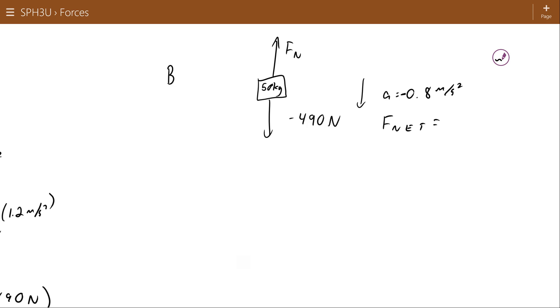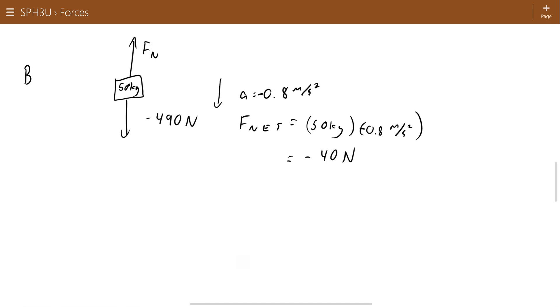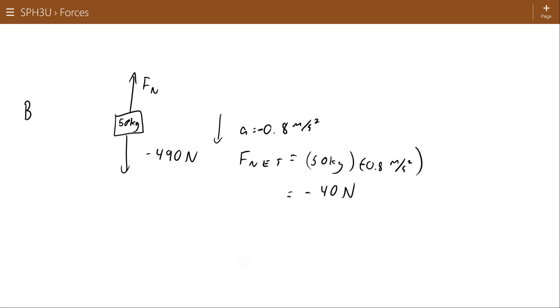We can convert that 0.8 into a net force by multiplying the mass times the acceleration. Don't forget the sign there. So the net force ends up being negative 40 newtons. So again, by inspection, what we can see is that the gravitational force is getting to do its acceleration. So the normal force must not be as big as we thought it was going to be. We thought it would be 490, but it's going to be 40 newtons short of that. So it's actually going to be 450 newtons.